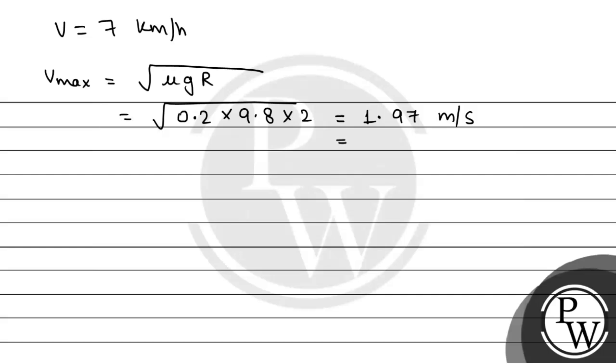And if we change it into kilometers per hour, this will be 1.97 times 18 by 5, which equals 7.2 kilometers per hour. So as we can see that v is less than maximum safe velocity.